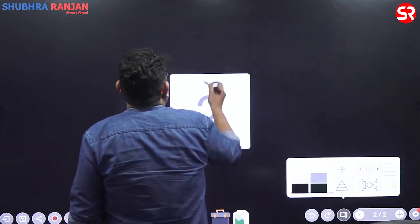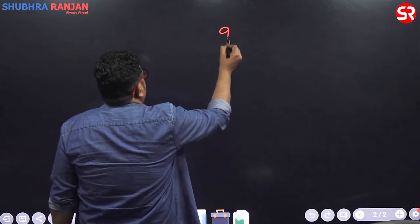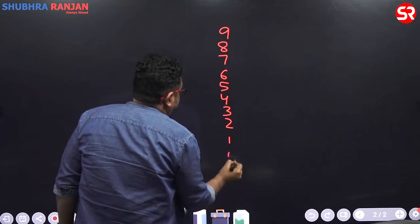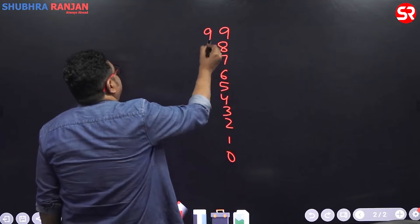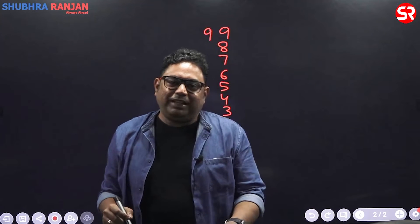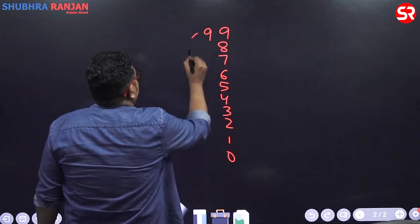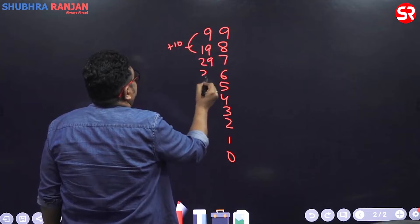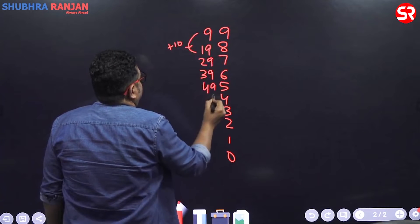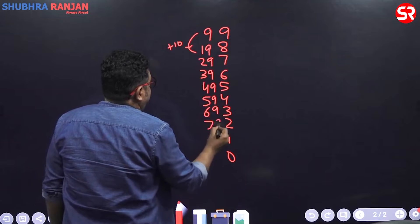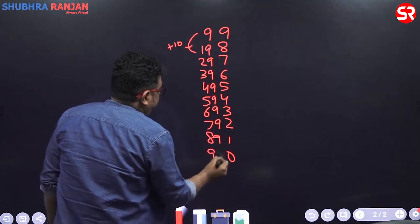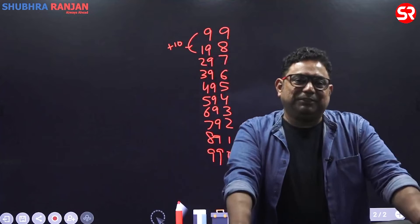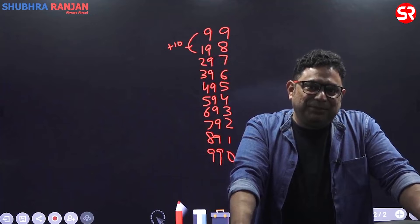For example, table of 99: again 9, 8, 7, 6, 5, 4, 3, 2, 1, 0 and start with 9 on the other side. The addition would be plus 10: 9, 19, plus 10 is 29, 39, 49, 59, 69, 79, 89 and 99. So now we are comfortable with tables ending with 9 — it won't be a problem.